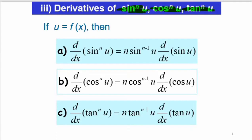The first formula is when we differentiate sine to the power of n·u. We bring n as the coefficient, then subtract the power by 1, and then differentiate sine·u. So we are actually using the power rule.